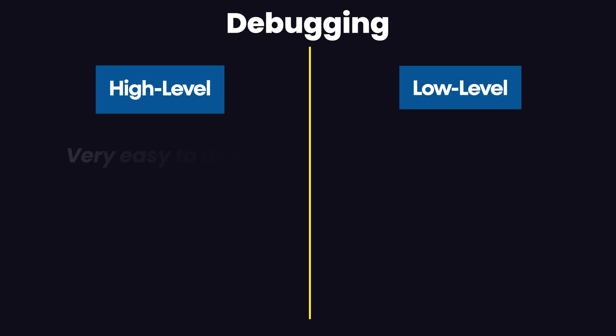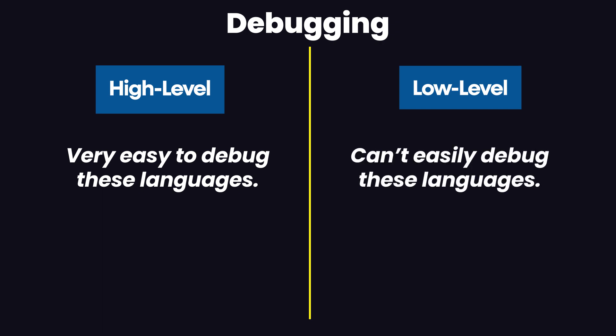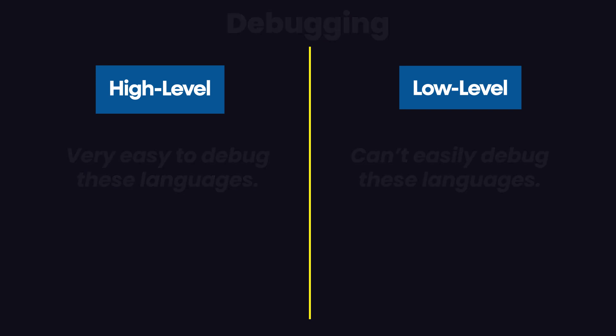Regarding debugging: high level languages are easier to understand, so debugging errors in them is much easier. Debugging code written in a low level language is significantly harder, because a programmer must be at an expert level in that particular language — and even then, they would be slower than a beginner working in a high level language.